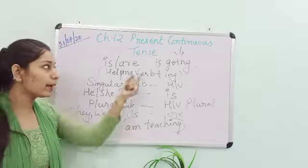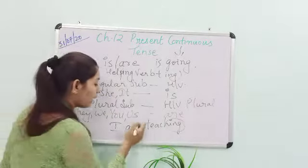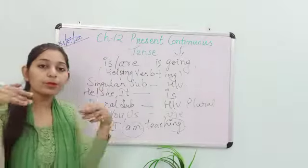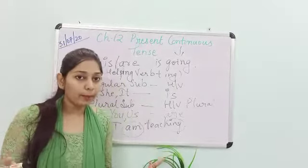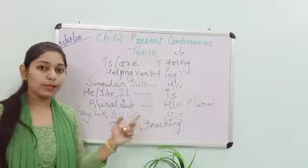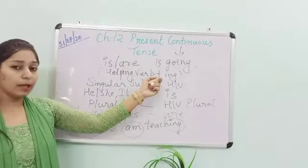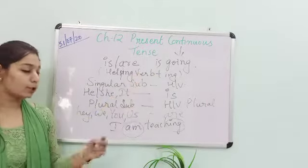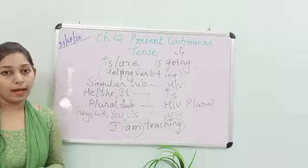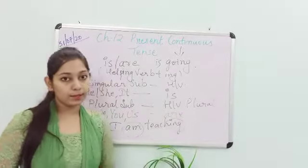Aur yeh aap kaise dekhoge. It is present or past. Present I am laga hai. It means something which is going on currently. Jo cheez hai abhi ho rahi hai, to ho kya ban gaya? Aapka present continuous tense. Aur yeh hi to aapka formula tha. Helping verb plus ing. To helping verb yaha pe kya ho gaya? Aapka am ho gaya. Aur continuous aapka ing ho gaya.